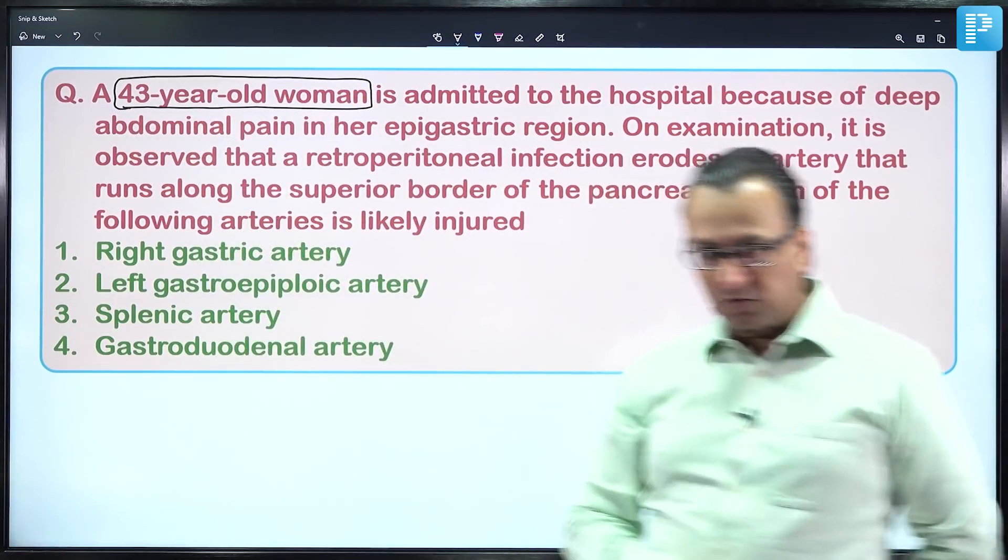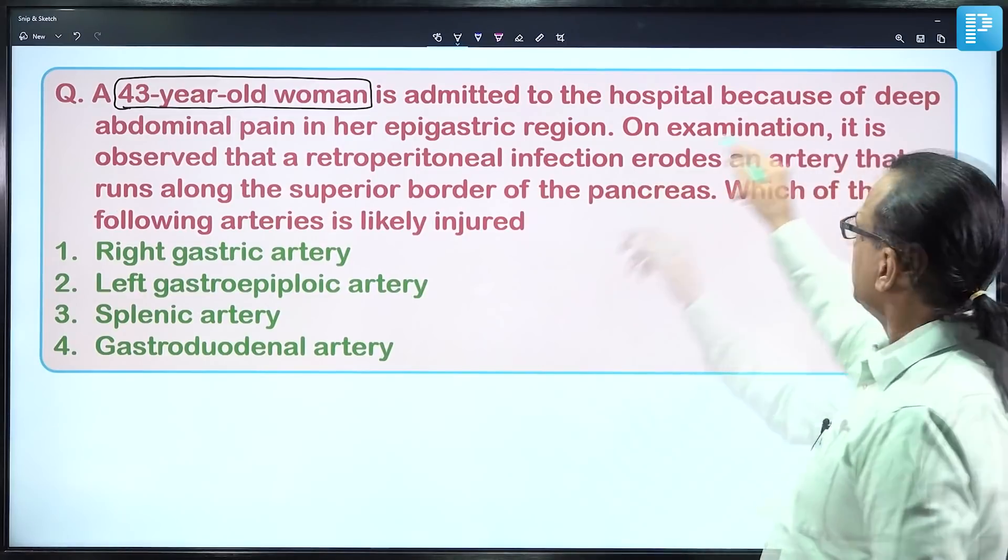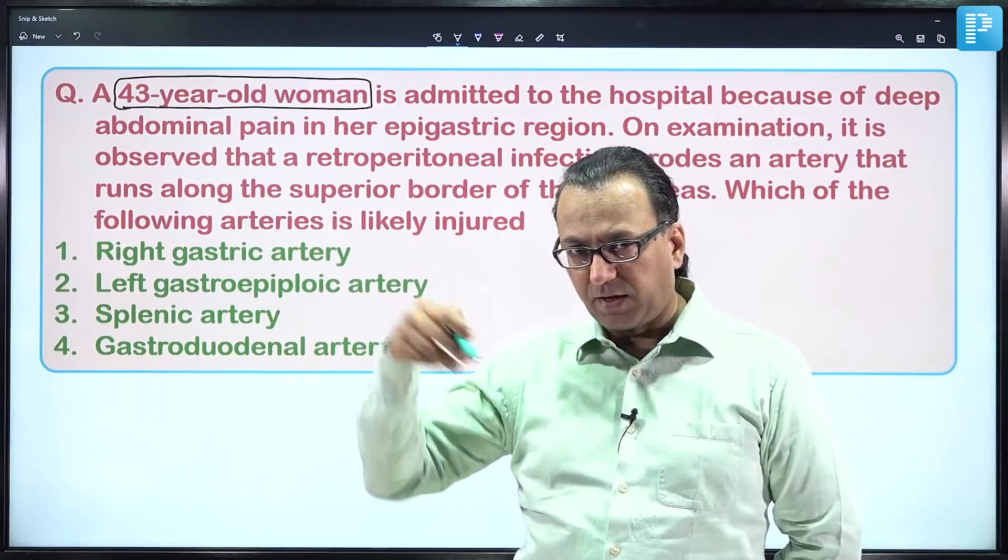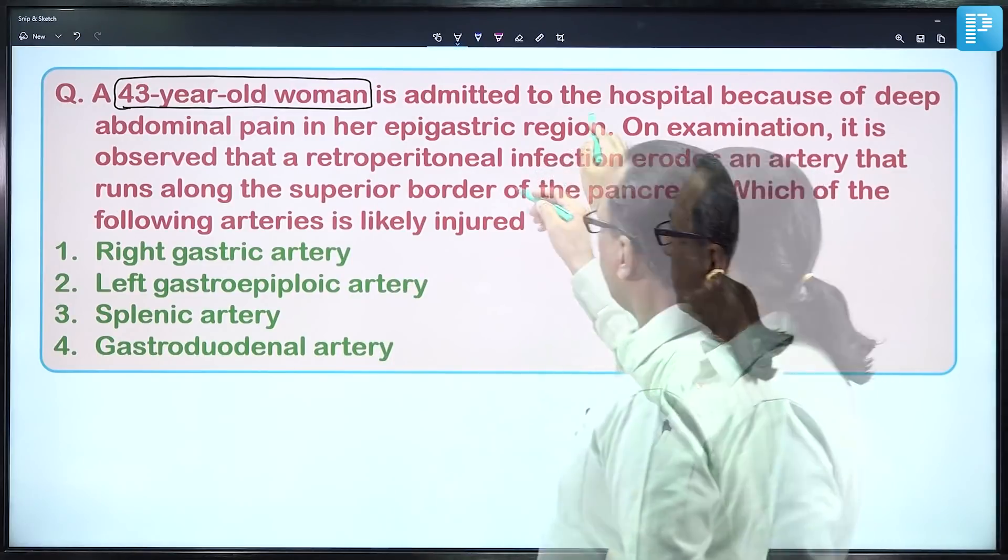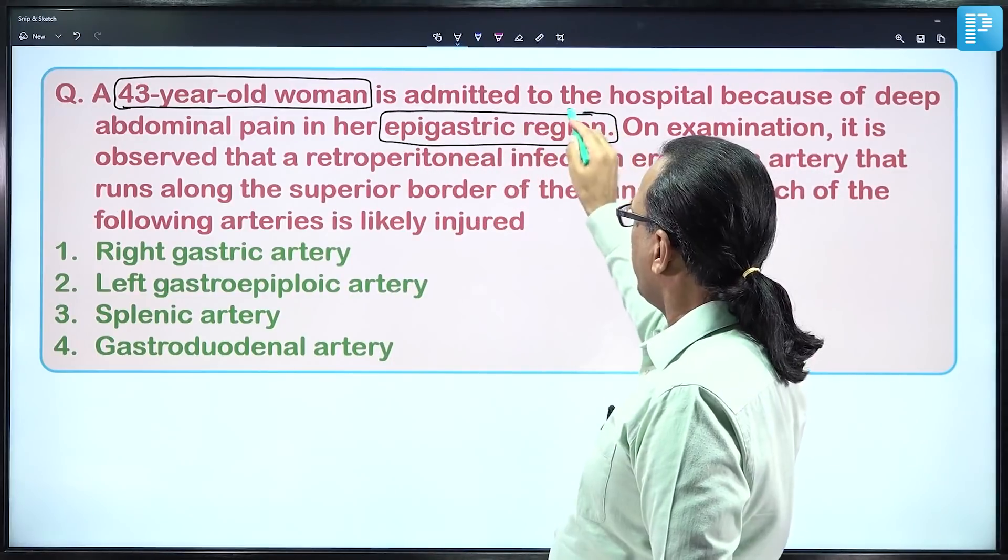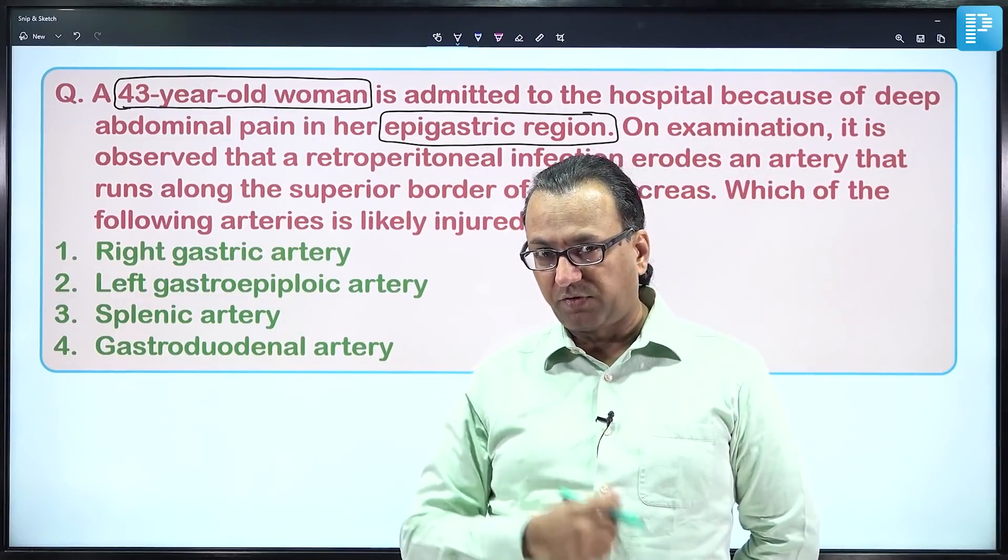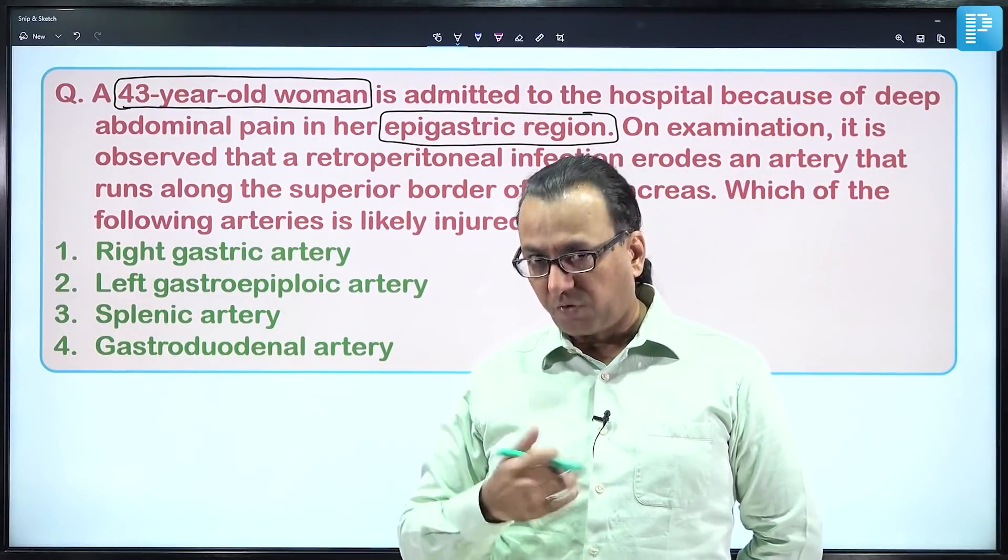She is admitted to the emergency department with deep abdominal pain in her epigastrium. This suggests the pain could be arising from the foregut region. Embryologically, referred pain from the foregut is felt in the epigastrium.